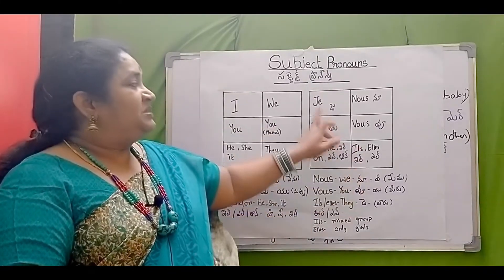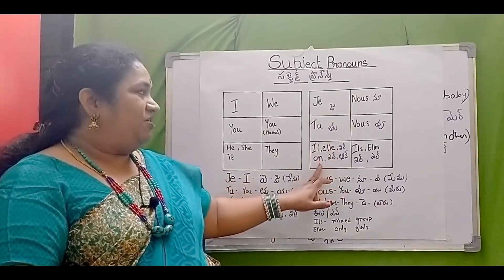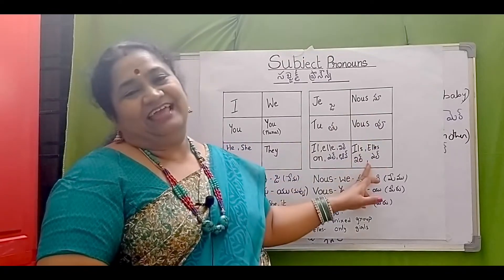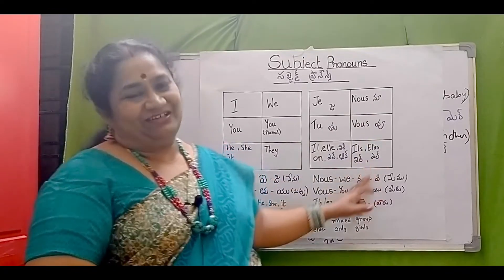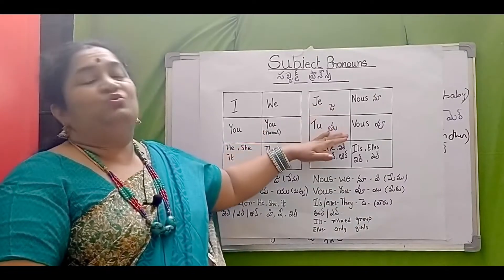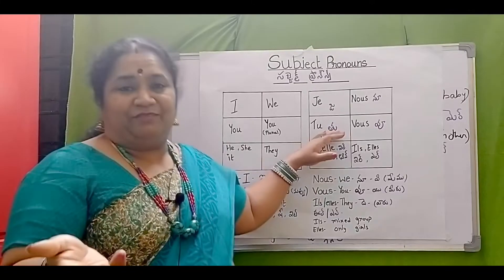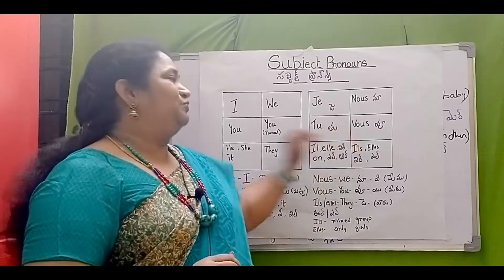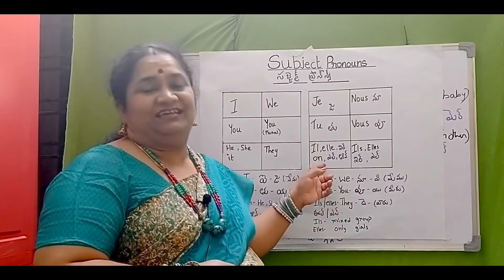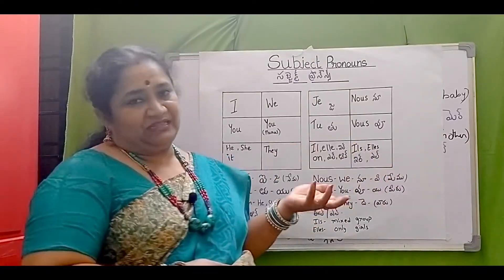Let's go through it quicker. Je, tu, il, elle, on, nous, vous, ils, elles. Je means I in English. Tu is you — informal, like when talking to friends or children. Il and elle mean he, she, it — atanu, aame, vasthu.